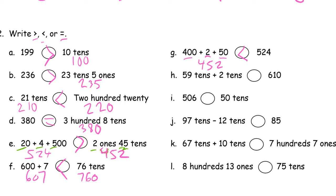Fifty-nine tens plus two tens — we're not adding ones now, we're used to seeing tens and then ones added on, but this is tens and tens. So that's fifty-nine plus two more, that's sixty-one. That's sixty-one tens, which is six hundred ten. These are equal.